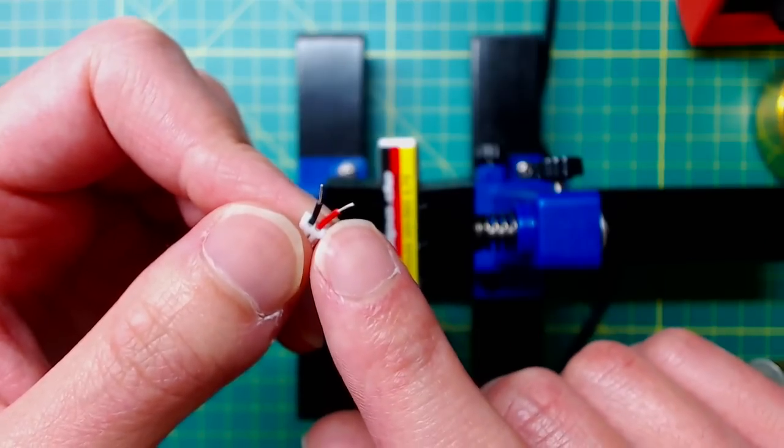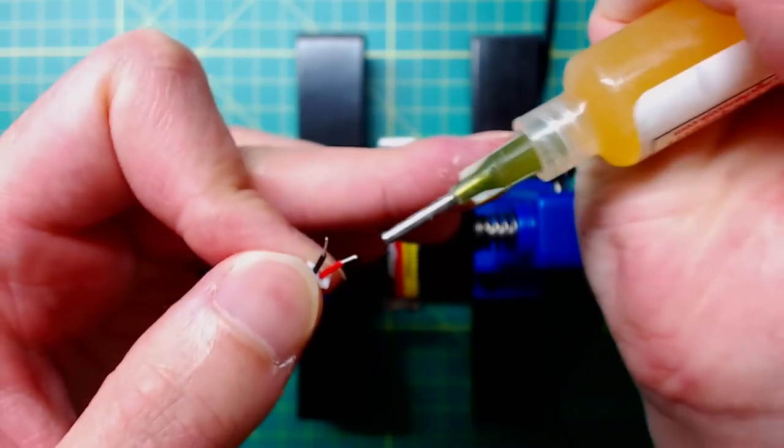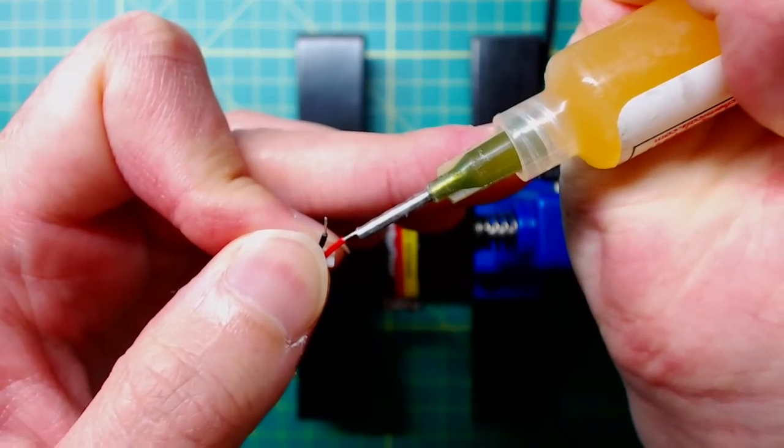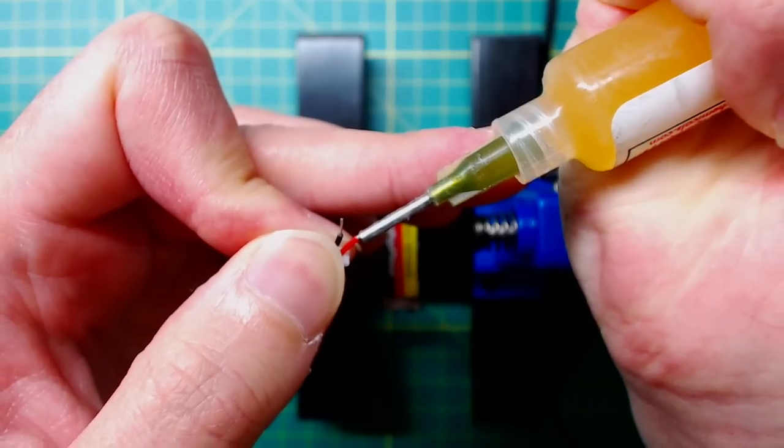To solder the wire to the pad it's very helpful to put some flux on the conductor of the wire. This will make sure we have a good solder joint.